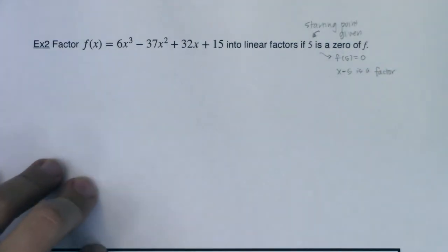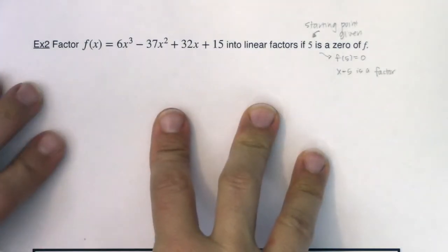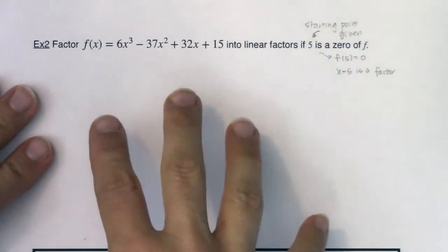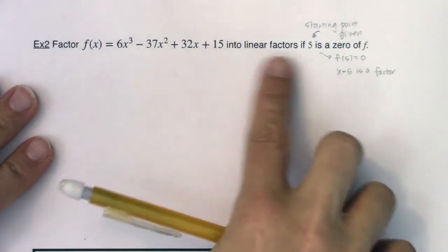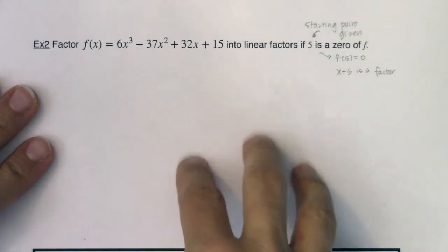But I'm missing two other factors. And I say two other factors because this is a cubic polynomial. So I probably have two other linear factors hanging out that I got to find.